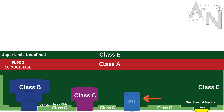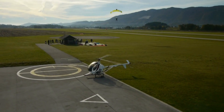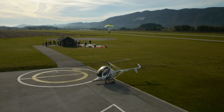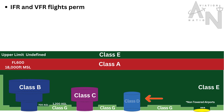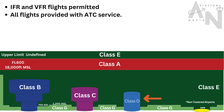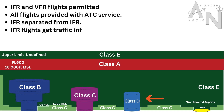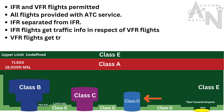Next up, Class D airspace. Class D airspace surrounds smaller airports with control towers. To enter Class D airspace, you must establish two-way radio communication with the tower, whether you're flying IFR or VFR. It's essential to adhere to ATC instructions in this airspace. IFR flights are separated from IFR, IFR flights get traffic information in respect of VFR flights, and VFR flights get traffic information in respect to all flights.